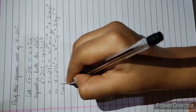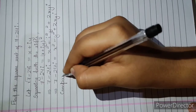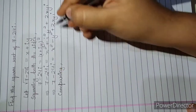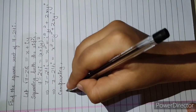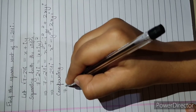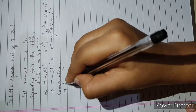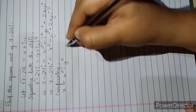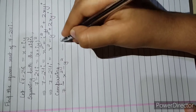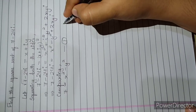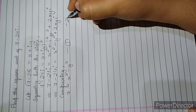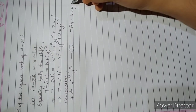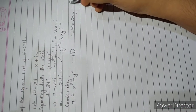Comparing both sides, we get 7 equals x squared minus y squared — this is our first equation. And the next equation is minus 24 equals 2xy — this is the second equation.